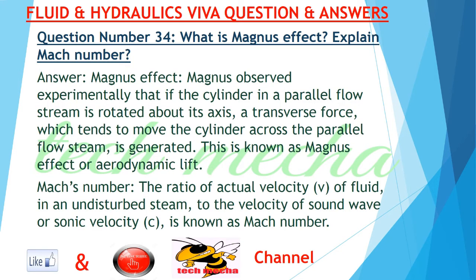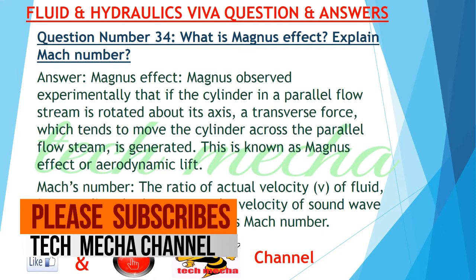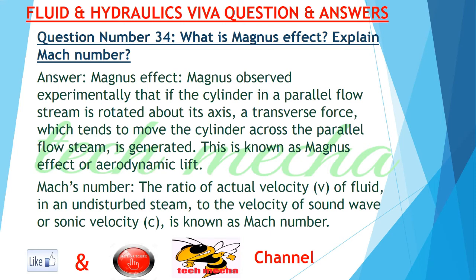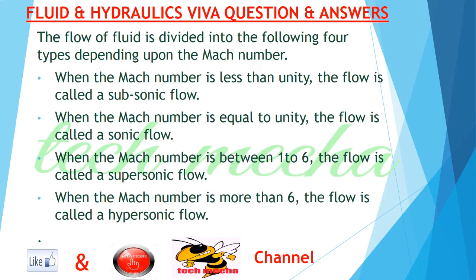Question number 34: What is Magnus' effect? Explain Mach number. Answer: Magnus' effect — Magnus observed experimentally that if a cylinder in a parallel flow stream is rotated about its axis, a transverse force which tends to move the cylinder across the parallel flow stream is generated. This is known as Magnus' effect or aerodynamic lift. Mach's number — the ratio of actual velocity V of fluid in an undisturbed stream to the velocity of sound wave or sonic velocity C is known as Mach number. The flow of fluid is divided into the following four types depending upon the Mach number.